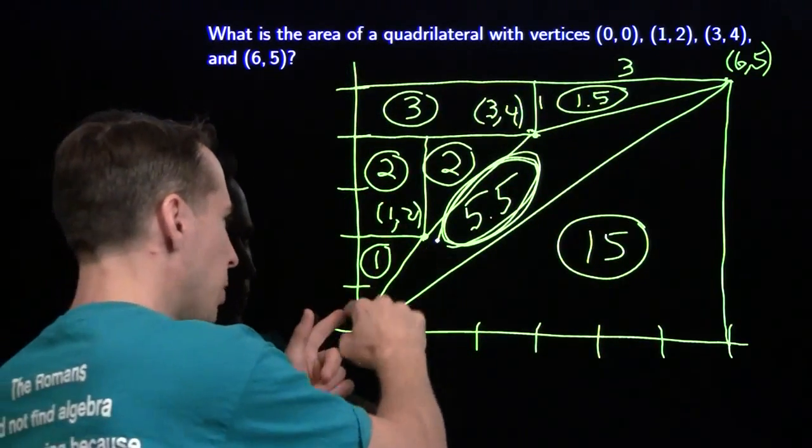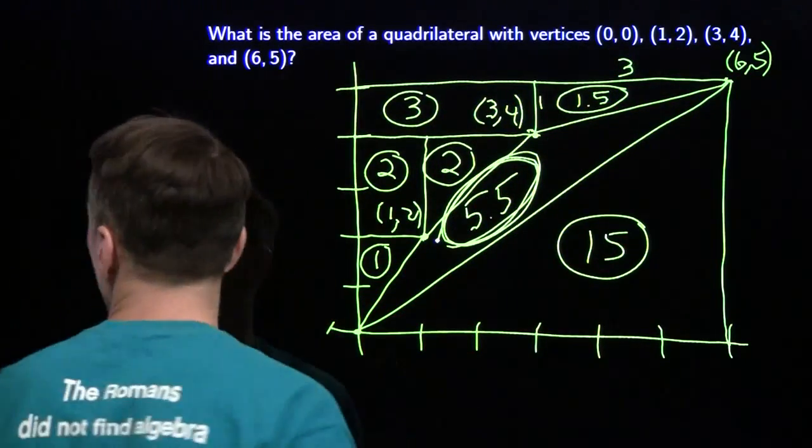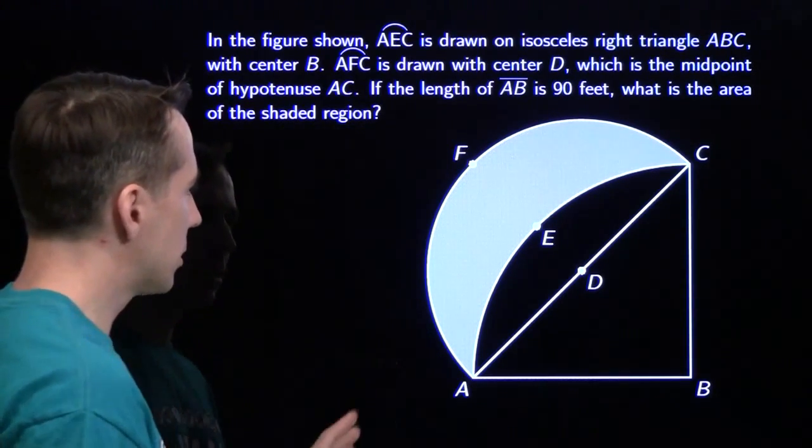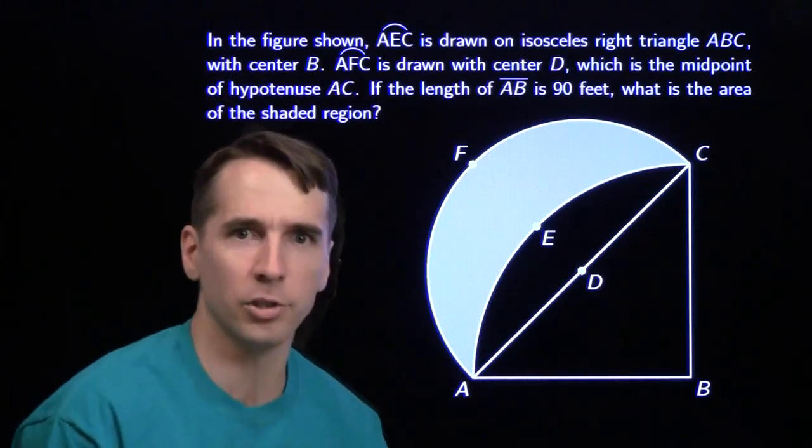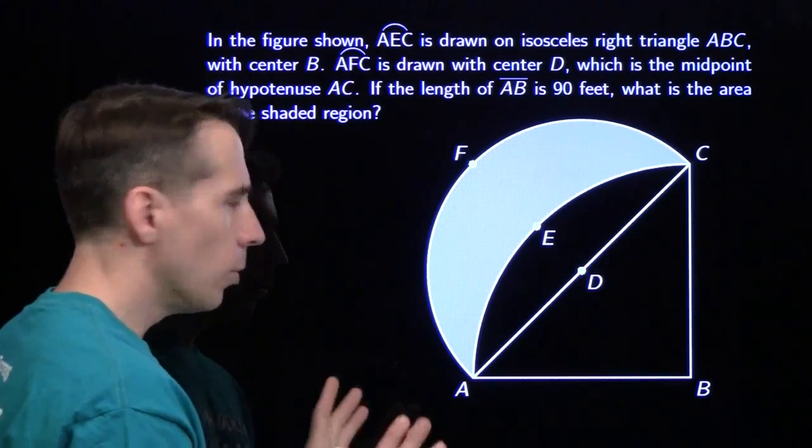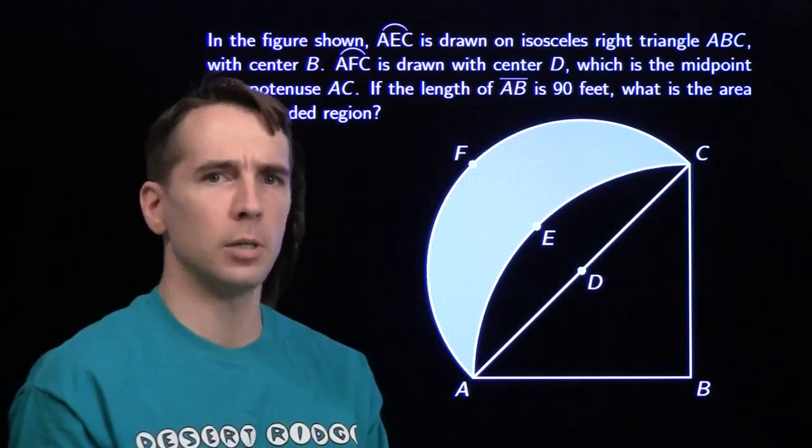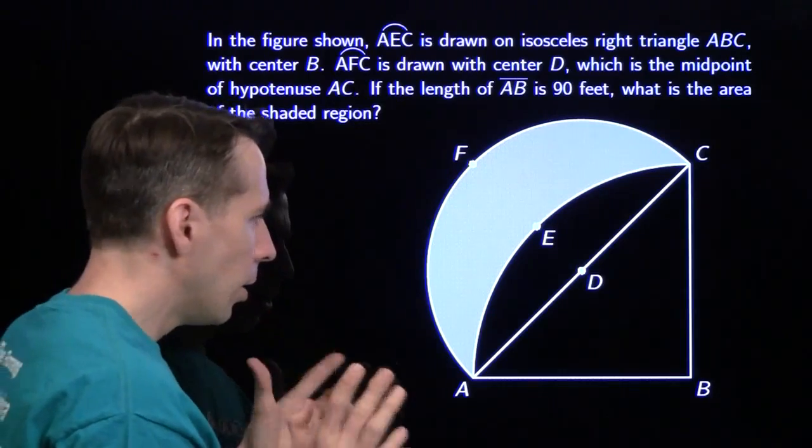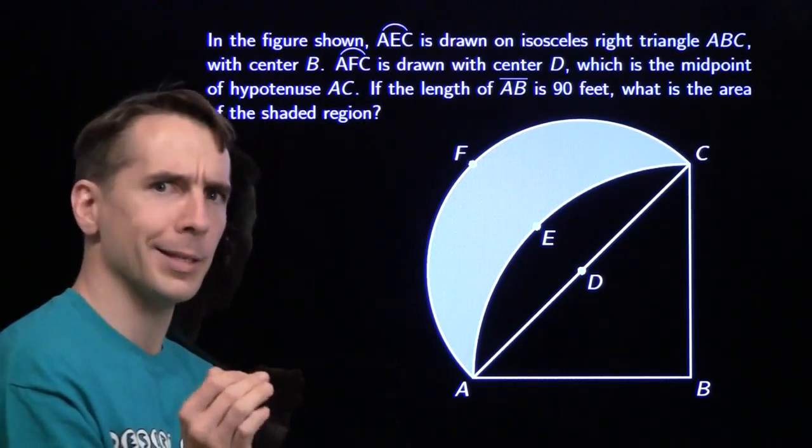Once again, key strategy there is express this weird region in terms of pieces that you can handle. Now let's try that on the next problem. Yikes. This is a bit scarier because we've got all these weird curves. We know how to handle a circle, but that's not a circle. Once again, the strategy is express the area we want in terms of pieces we understand.